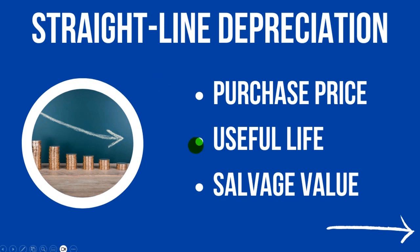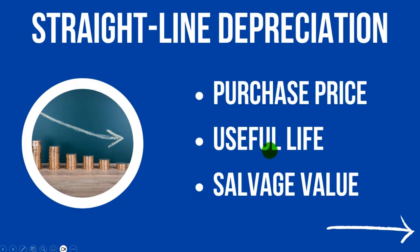The next thing you'll need is the useful life of the asset — how long the asset will be in the business. As an example, the business may have purchased a new car which costs $35,000, and the business is expected to have the vehicle for five years, then plans to sell it. So the purchase price is $35,000 and the useful life is five years. Or a business may purchase an office desk for $500,000 expected to last 10 years.